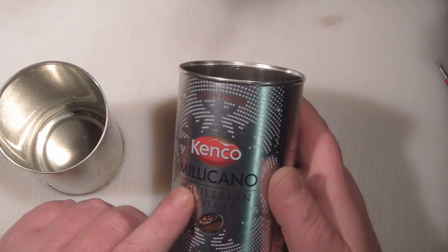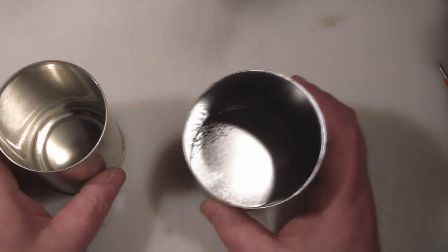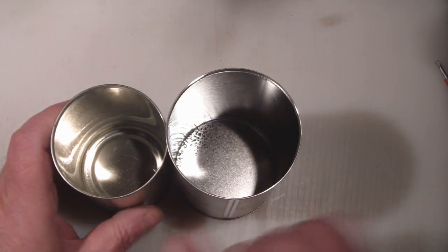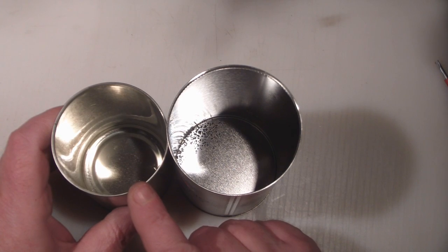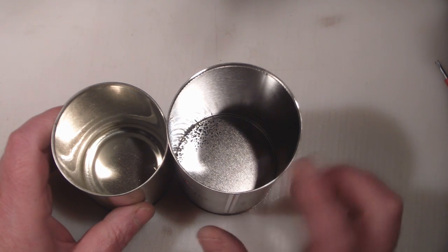Here I've got a coffee can, a small Kenco one, just slightly bigger diameter than this one. This one's going to be for my 5 GHz, this one for the 2.4 GHz.